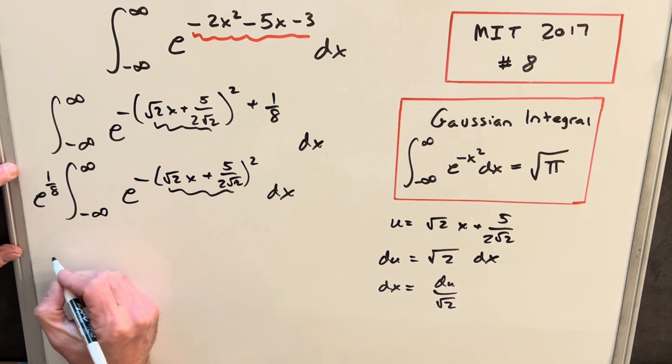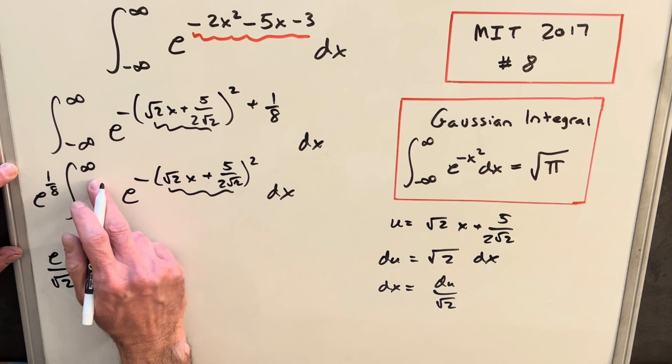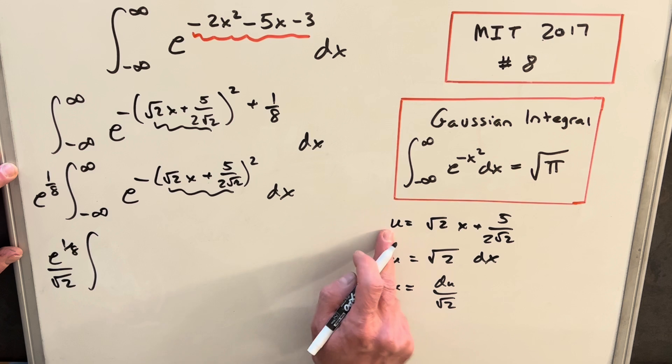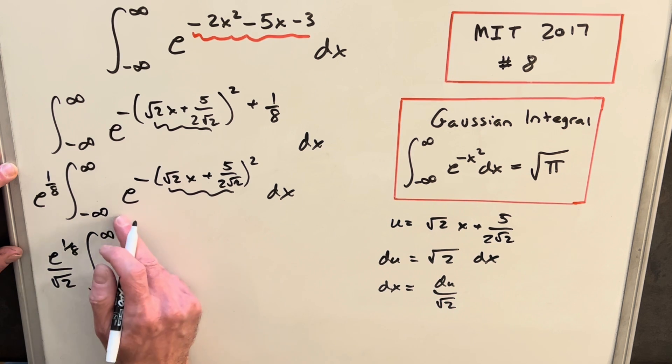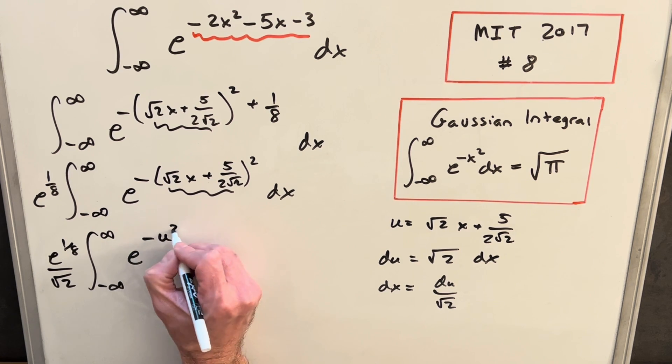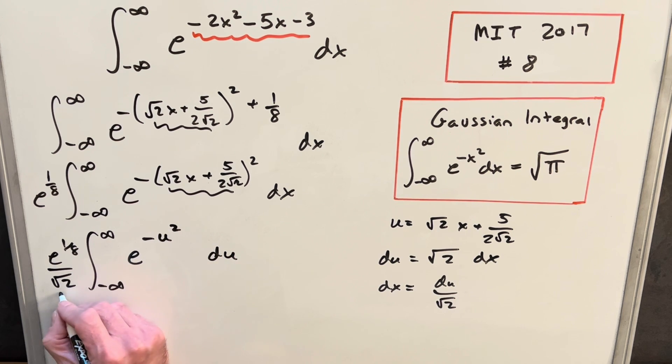So now I'll make the u substitution. We'll have e to the 1 over 8. I'm going to take from our d, I'm going to take the square root of 2 and just bring it up front all in one step. And then for our bounds, you'll notice we plug infinity into our term here. Square root of 2 times infinity is still going to be approaching infinity. And the same thing with minus infinity when you plug that in there. So our bounds don't change. We're going to have e to the minus u squared. And our dx again is du over the square root of 2 that we already brought out here.